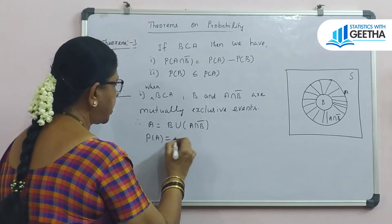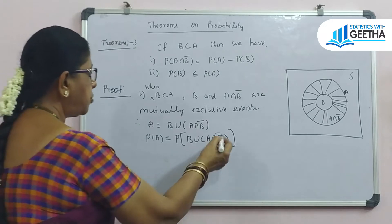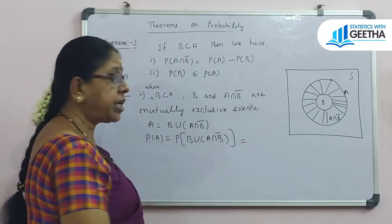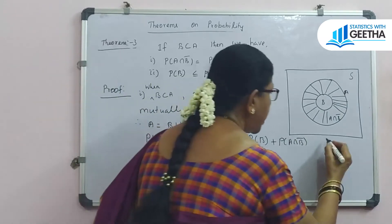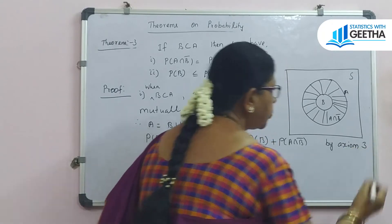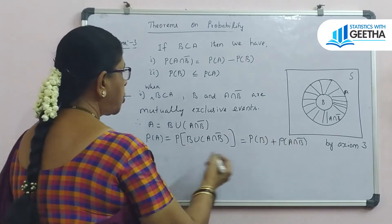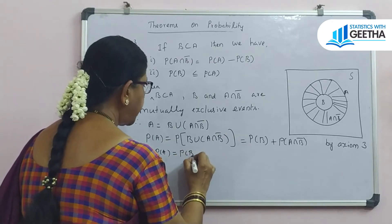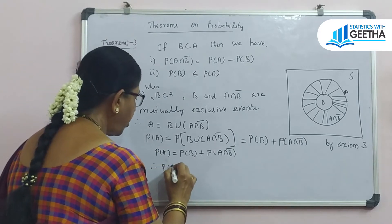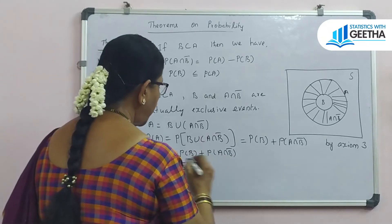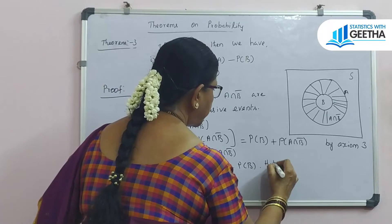Taking probability on both sides, we have probability of A equals probability of B union A intersection B complement. Applying axiom 3 for two mutually exclusive events: P(B) plus P(A ∩ B') equals P(A). Therefore P(A ∩ B') equals P(A) minus P(B). Our result 1 is proved. Hence the proof of 1.